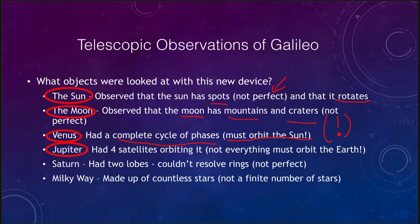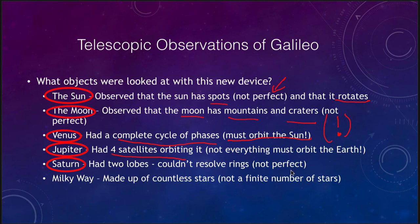He looked at Jupiter and saw that it had four satellites orbiting it, which showed that not everything had to orbit the Earth. He also looked at Saturn and saw that it had two lobes on either side — he couldn't see the rings, but again Saturn was something unusual, not a perfect spherical object. And he saw the Milky Way, finding that it was made up of countless stars — not a finite number — and that the stars are probably a lot further away than originally thought.